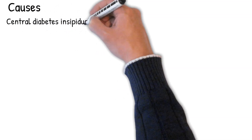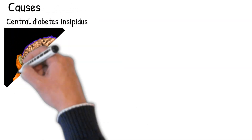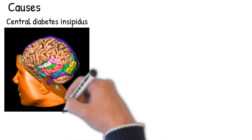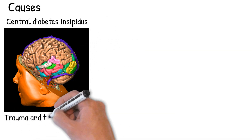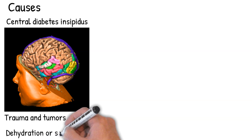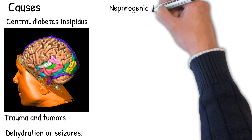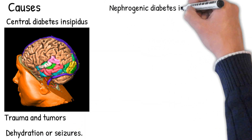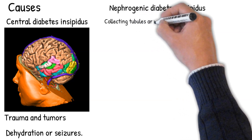In central diabetes insipidus (CDI), there is an absence of ADH. Common causes of CDI include central nervous system (CNS) trauma and tumors. The reduction of fluid has little effect on the concentration of the urine. Complications may include dehydration or seizures.